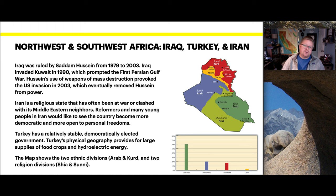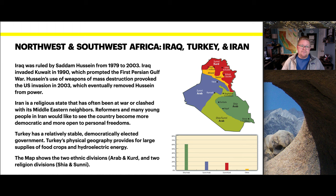Moving into Iraq, Turkey, and Iran: Iraq was ruled by Saddam Hussein from 1979 to 2003. Iraq invaded Kuwait in 1990, prompting the first Persian Gulf War. Hussein's use of weapons of mass destruction provoked a U.S. invasion in 2003, which eventually removed him from power. Iran is a religious state that has often clashed with its Middle Eastern neighbors; reformers and young people would like to see the country become more democratic. Turkey has a relatively stable, democratically elected government, and its physical geography provides for large supplies of food crops and hydroelectric energy.